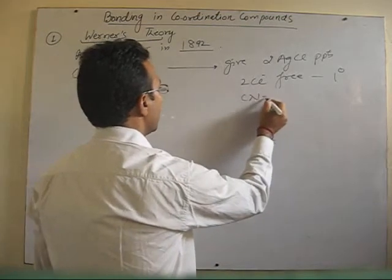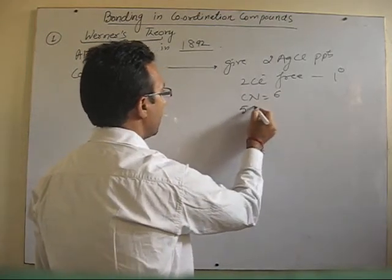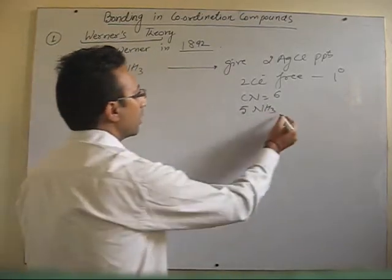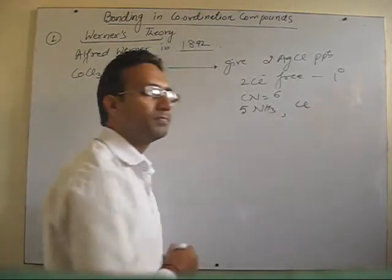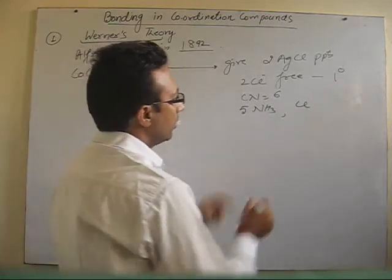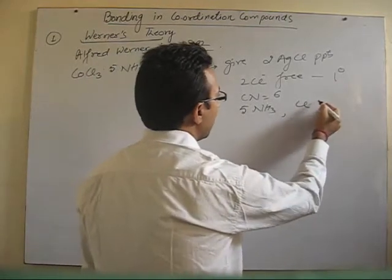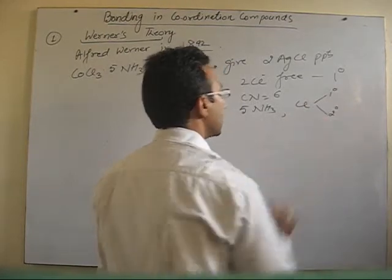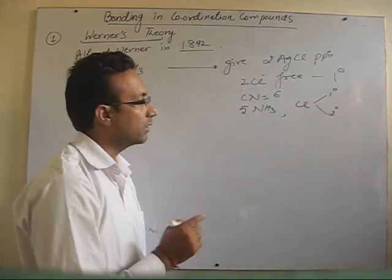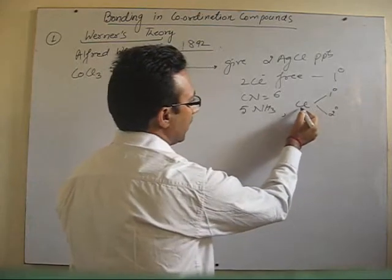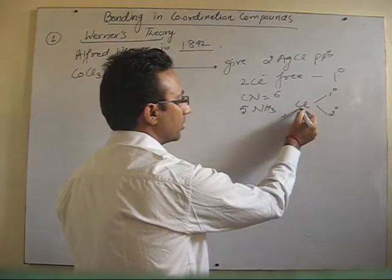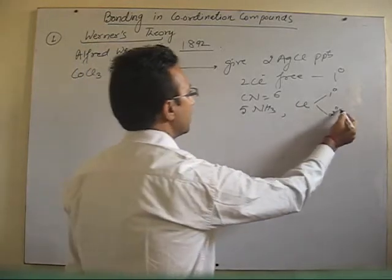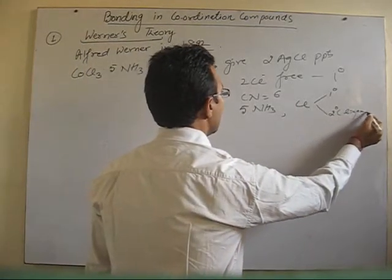As the coordination number is 6, we have 5 ammonia available. Moreover, 1 Cl is also there. So this particular Cl is satisfying both its primary as well as secondary valencies — that means it is present as a counter ion and also as a ligand.